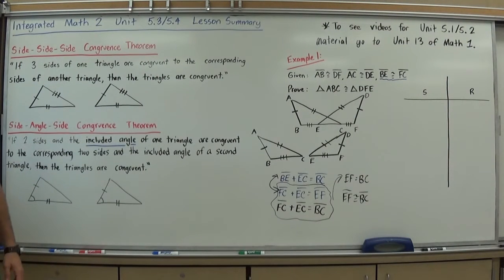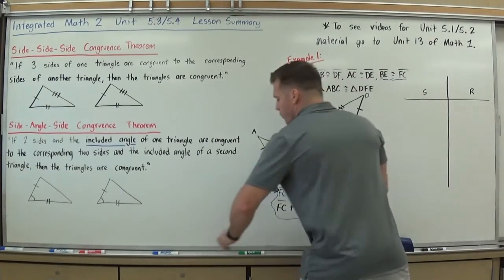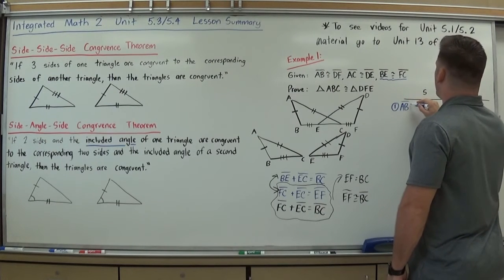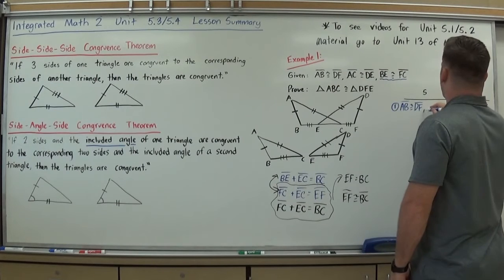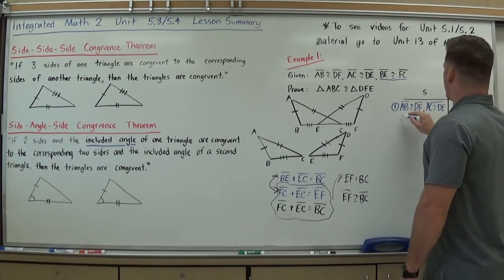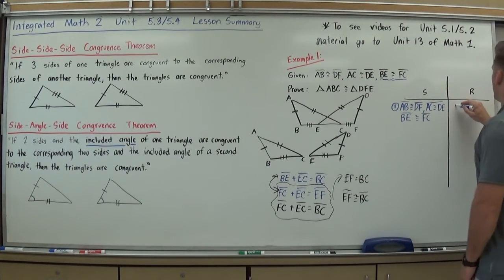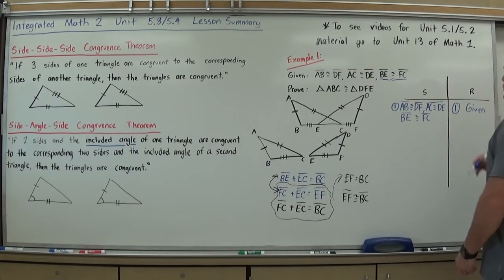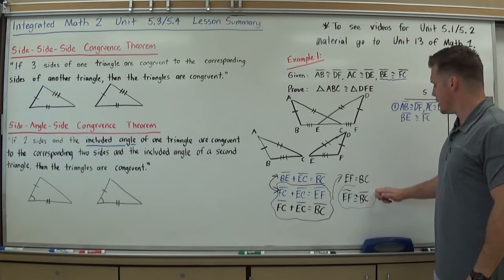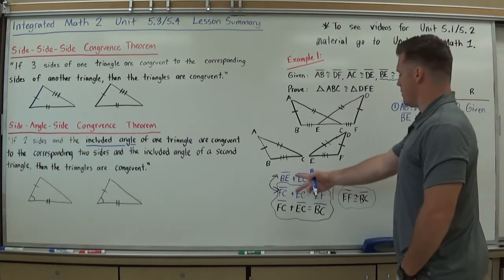But I did have to do a little work with segment addition postulate to kind of get there. So, now, formalizing it into a proof. You typically want to start with your givens, your easy information. So, I'll start there. I'm going to just copy our givens down. AB is congruent to DF, and AC is congruent to DE, and we'll say BE is congruent to FC. And our reason is just given. That was given information. So, I started with that. Now, I need to formalize this last statement here. It's ultimately what I'm trying to get to.